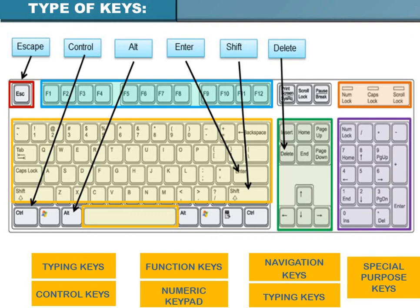The fourth type is the numeric keypad, used to enter numeric data or perform cursor movements. It generally consists of a set of 17 keys laid out in the same configuration as most adding machines and calculators, making it handy for entering numbers quickly.